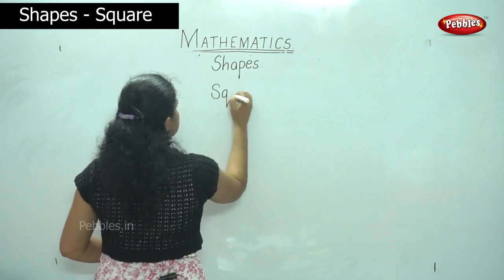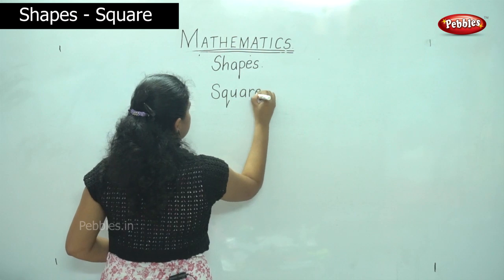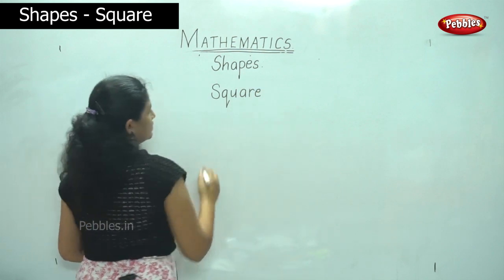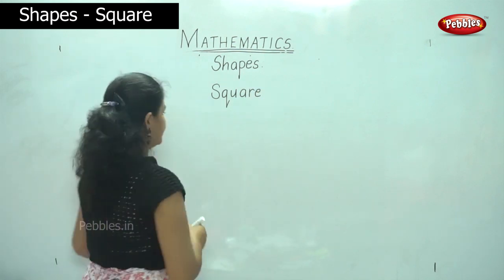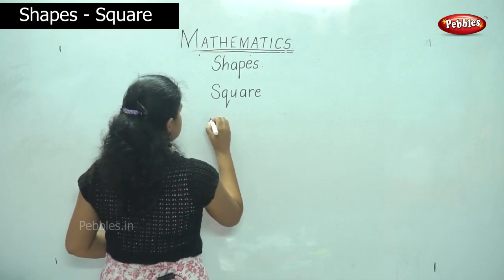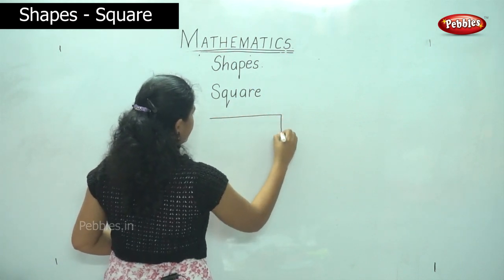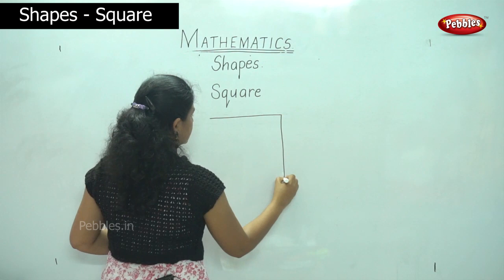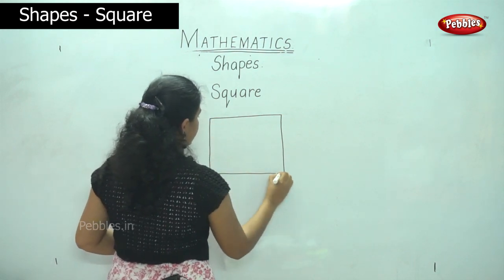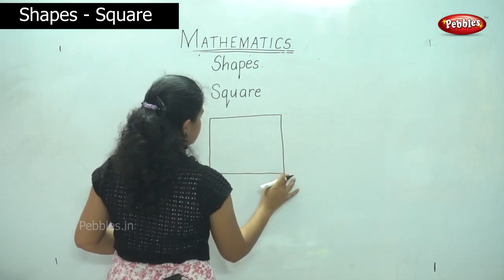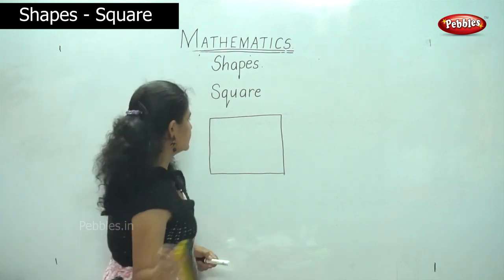This is a square. So we will first draw the square. We will start with the line on top, then you come down, and then both the sides, and you join it. So this is a square.